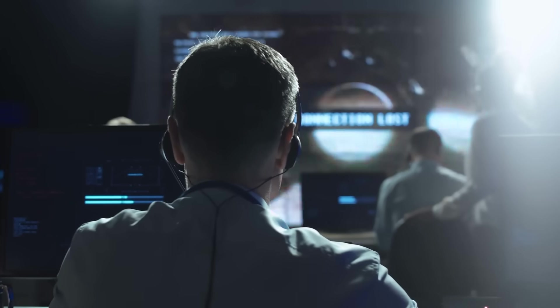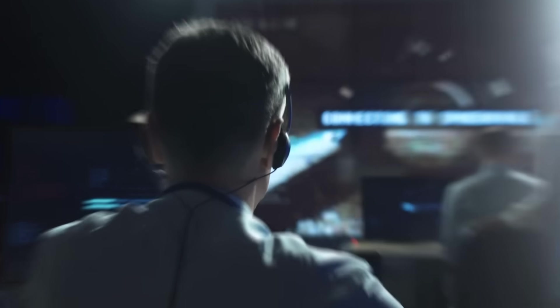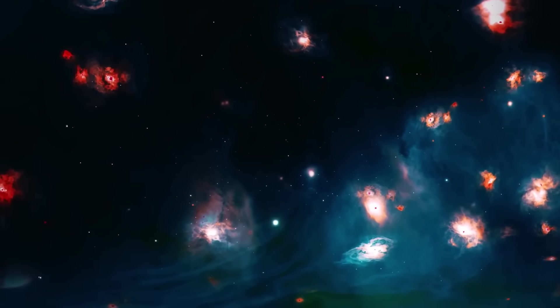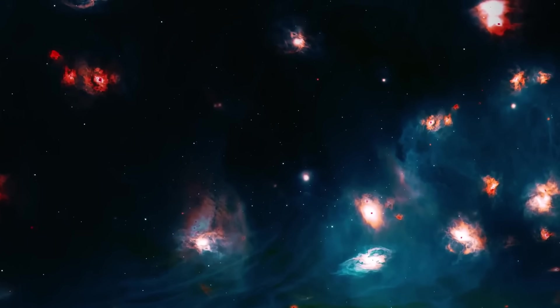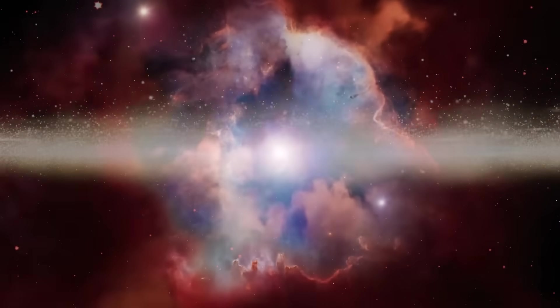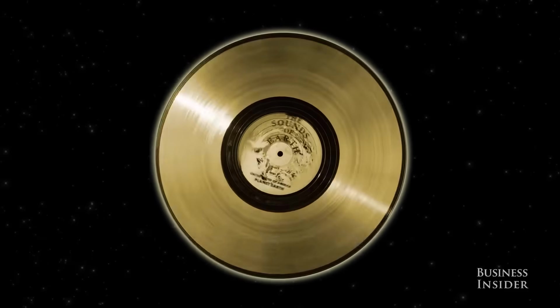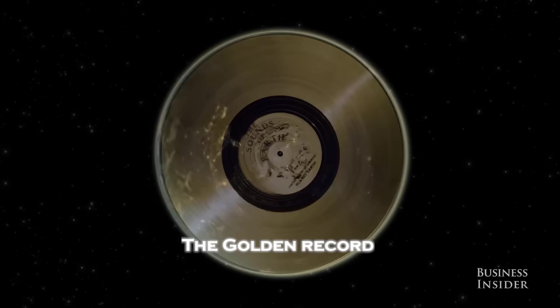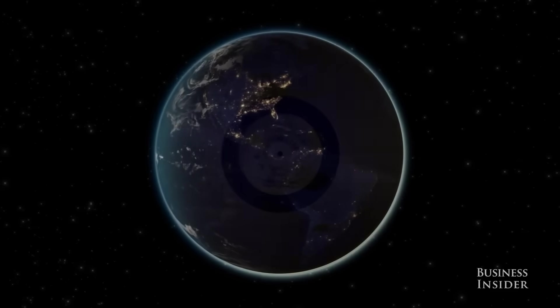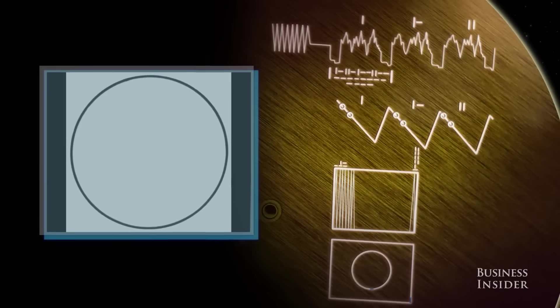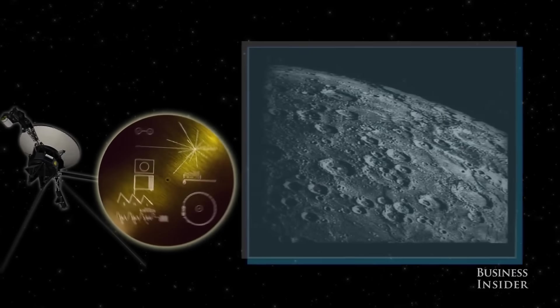Among the scientific community, whispers began to grow louder. What if the structure Voyager captured was not a natural object at all, but evidence of contact? The thought was electrifying but also terrifying. Voyager was launched with the golden record, a message from humanity containing greetings, sounds, and images from Earth. An invitation to any civilization that might find it.